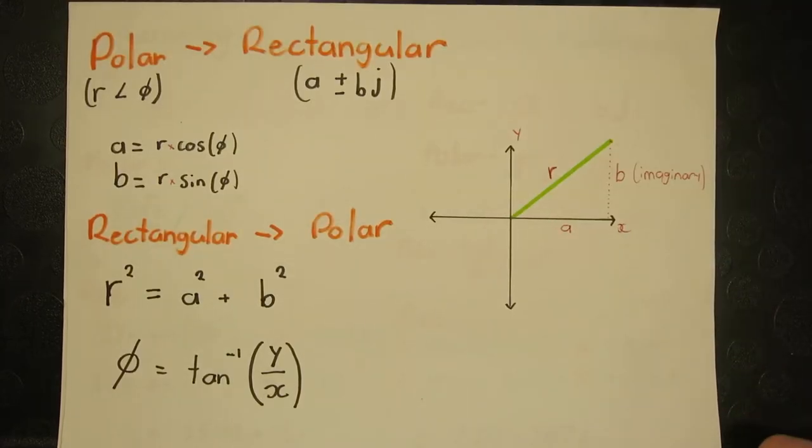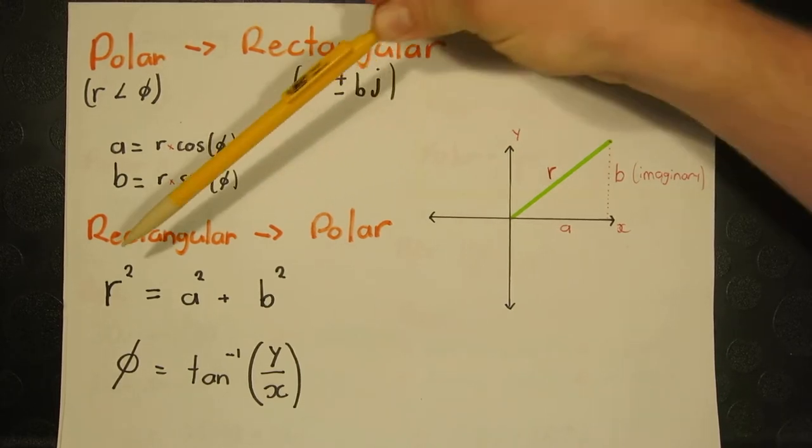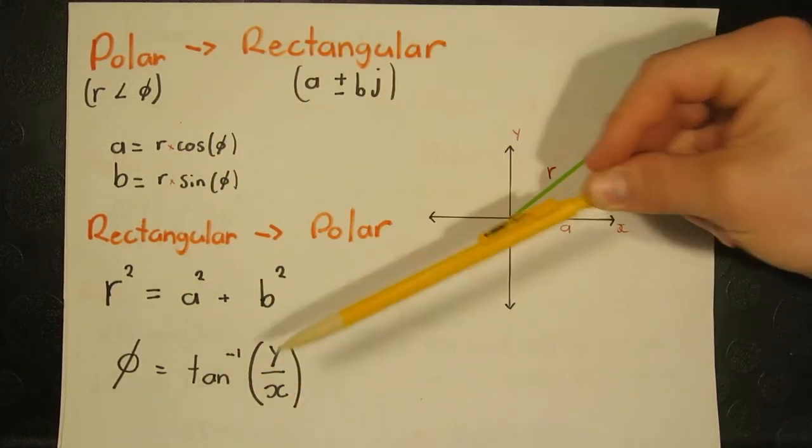In order to convert between polar and rectangular forms, we use these formulas here, and then rectangular to polar at the final end of the video, this form here.